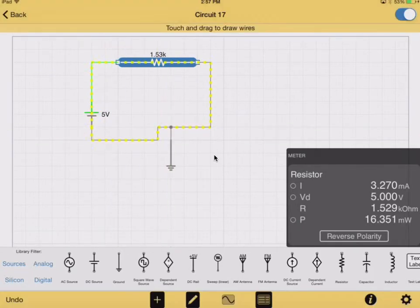All right, so now if I select, it asks, if the voltage is 5 volts, what will the current be? You can see that the current is given right here.